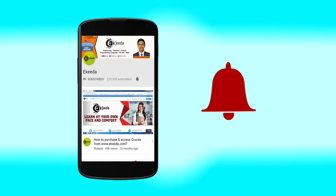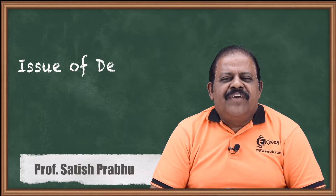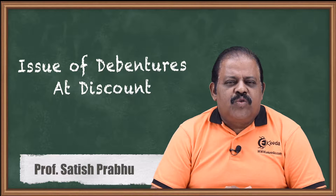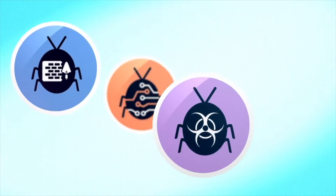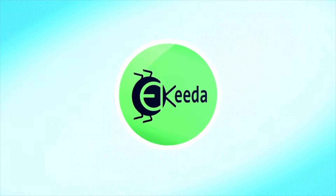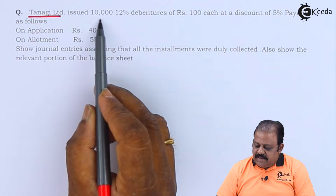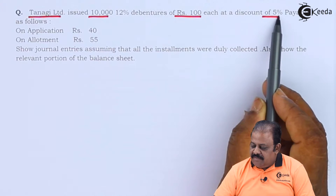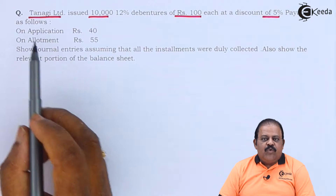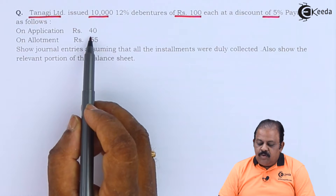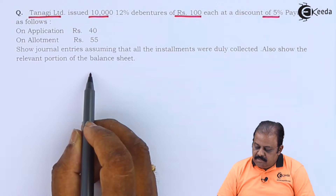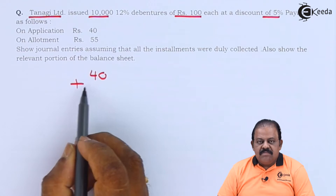Hello friends, let us understand accounting treatment of issue of debentures at discount. Let us go through the question: Tangil Limited issued 10,000 12% debentures of rupees 100 each at a discount of 5%, payable as follows — on application rupees 40, on allotment rupees 55.